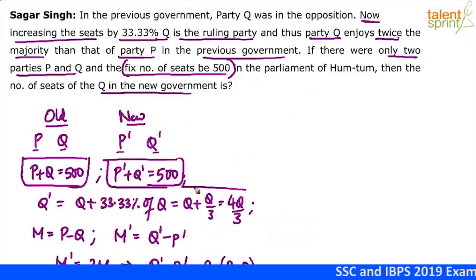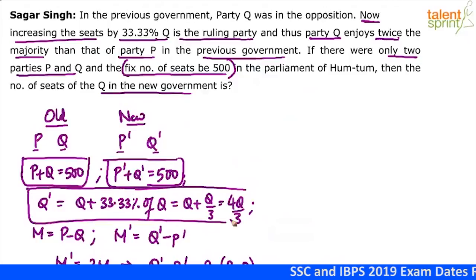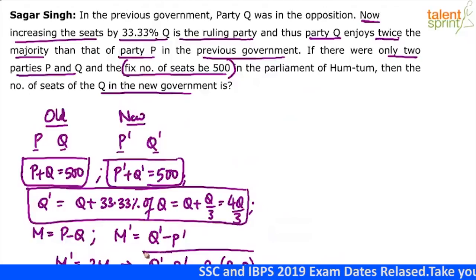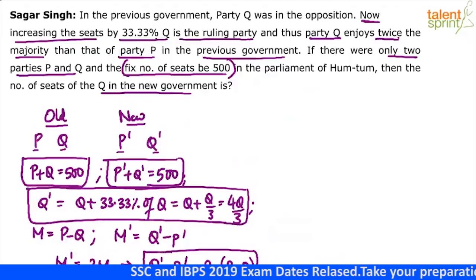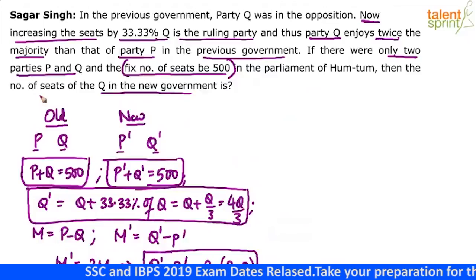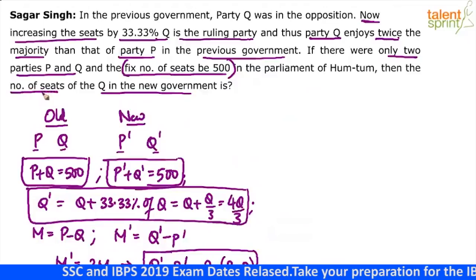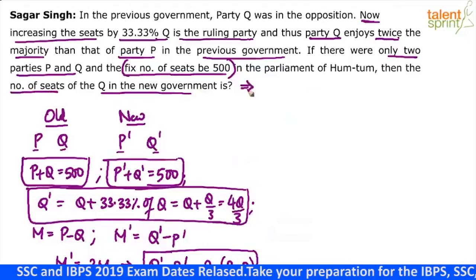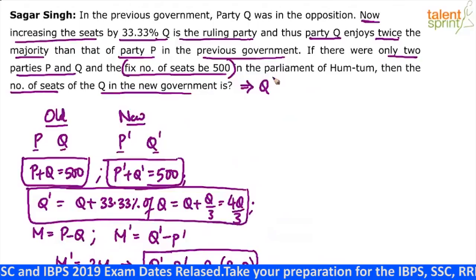So we have four equations in four variables. Solve and you will get the answer. The third equation is Q dash equals 4Q by 3, and the last equation is Q dash minus P dash equals 2 times of P minus Q. What the question is asking us to find out is the number of seats of Q in the new government — which means Q dash equals what?